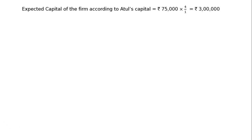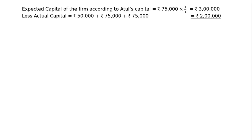Expected capital of the firm according to Atul's capital: Atul is the new partner bringing Rs. 75,000 as capital for one-fourth share. Hence, the expected total capital of the firm will be the reciprocal of Atul's share — that is 4/1 — multiplied by Rs. 75,000, which equals Rs. 3,00,000. Less actual capital of old partners plus new partner equals Rs. 2,00,000. The difference will be goodwill. That is, goodwill of the firm is Rs. 1,00,000.